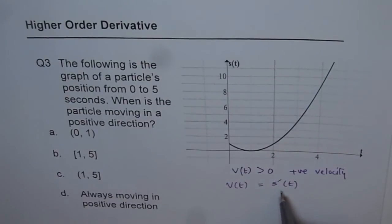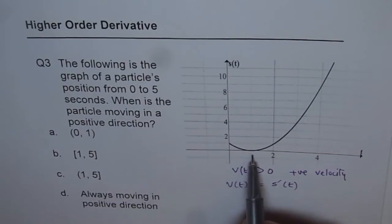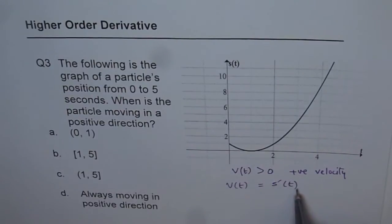Derivative means tangent. So if we have a negative tangent, then the velocity is negative. And if we have positive tangent, then the velocity is positive.